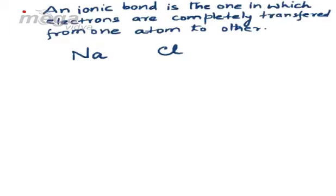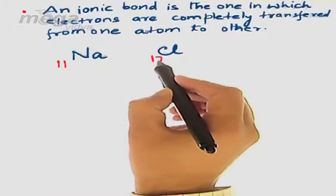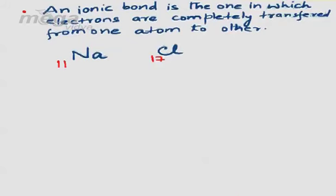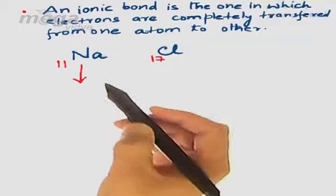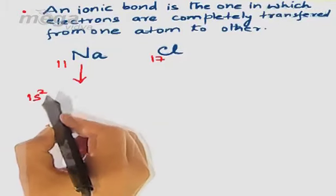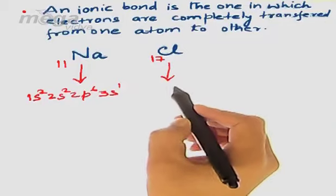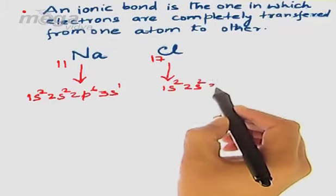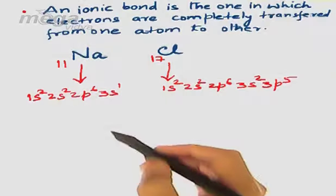Sodium has atomic number 11, while chlorine has atomic number 17. The electronic configuration of sodium is 1s² 2s² 2p⁶ 3s¹, while for chlorine it is 1s² 2s² 2p⁶ 3s² 3p⁵.